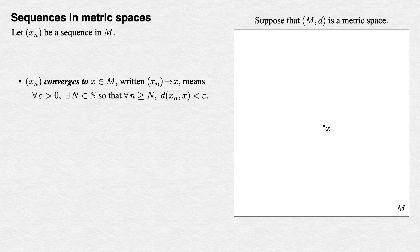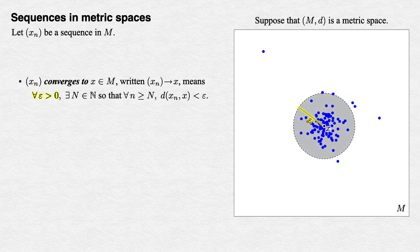In terms of the definition, given a positive radius epsilon around x, if we toss out enough initial terms, the rest for little n >= capital N land inside the target, meaning d(x_n, x) < epsilon.